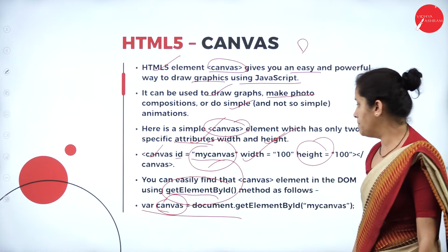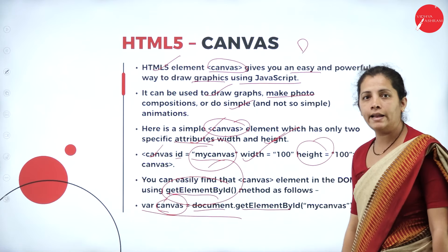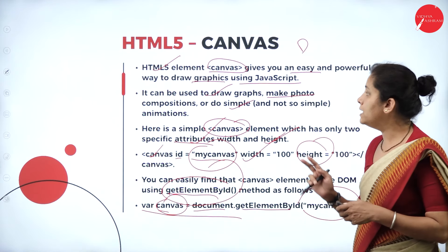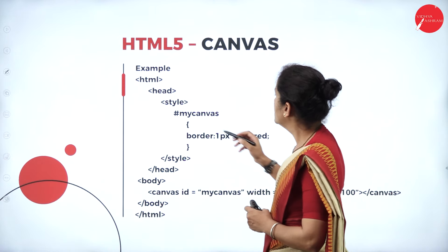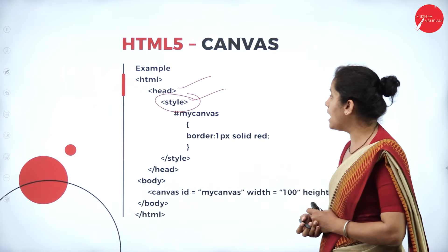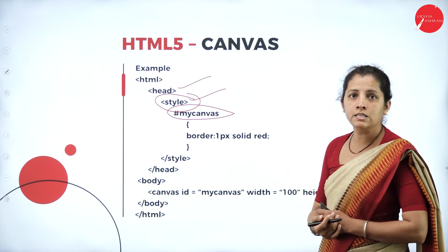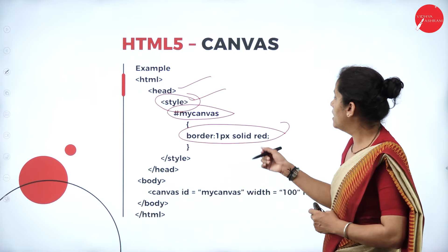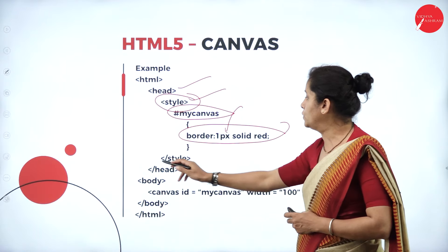The canvas variable is assigned using: document.getElementById, passing the canvas id name inside double quotes. In the code example, I'll start with the head section, then add a style tag. I'm going to define the selector 'myCanvas' and specify the border, its thickness, and color.